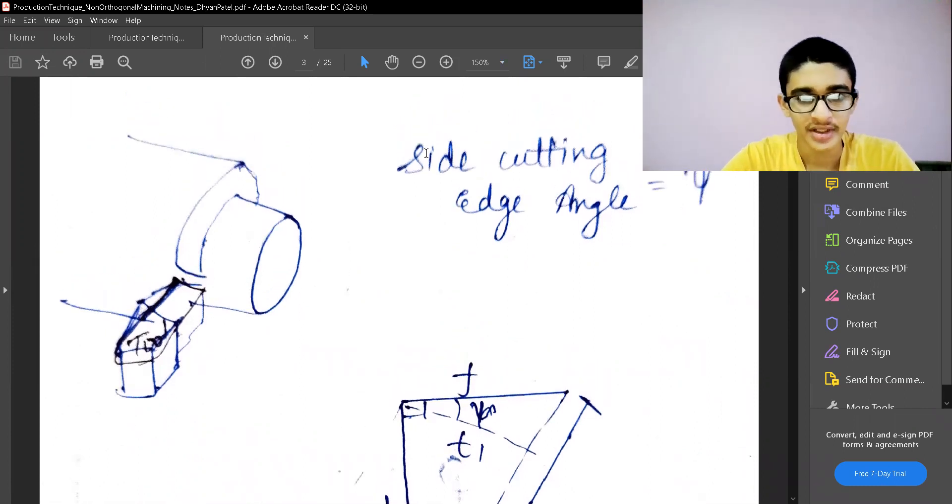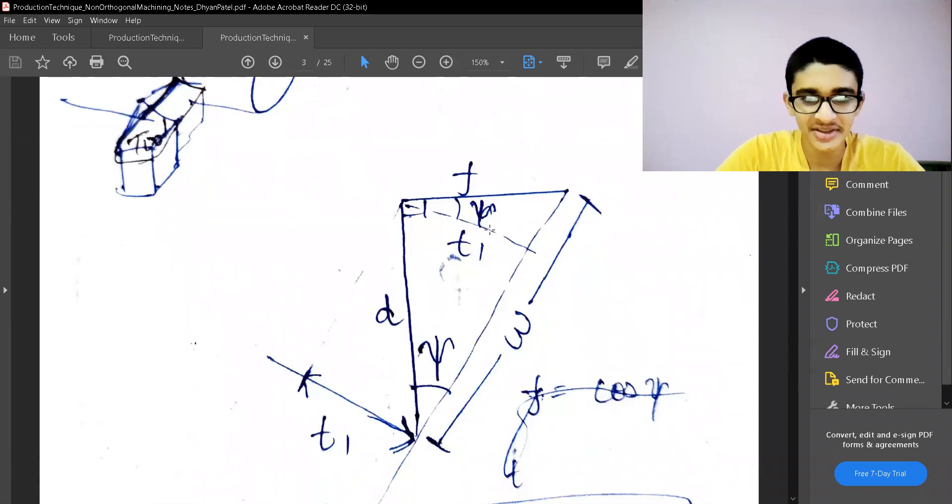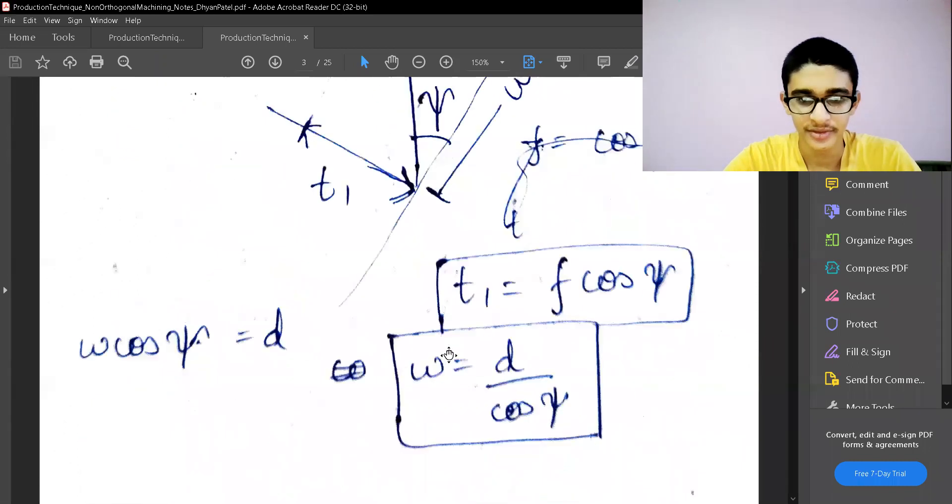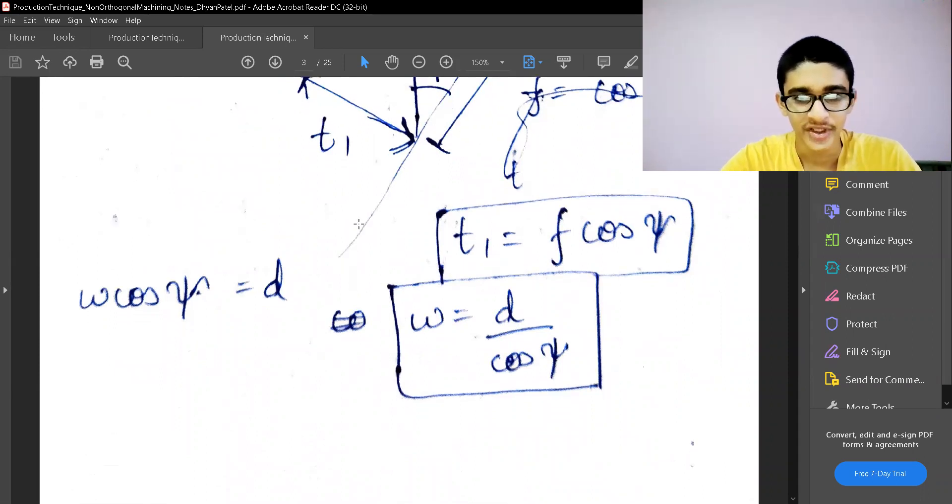Let's look at the side cutting edge angle, psi. This is the triangle which is coming because of the forces acting and these are the distances. This is the angle psi, and using this trigonometry I'm going to relate depth of cut and width of cut with the uncut thickness and feed rate. Using this trigonometry, I'm getting t1 equals f cos psi and w equals d divided by cos psi.